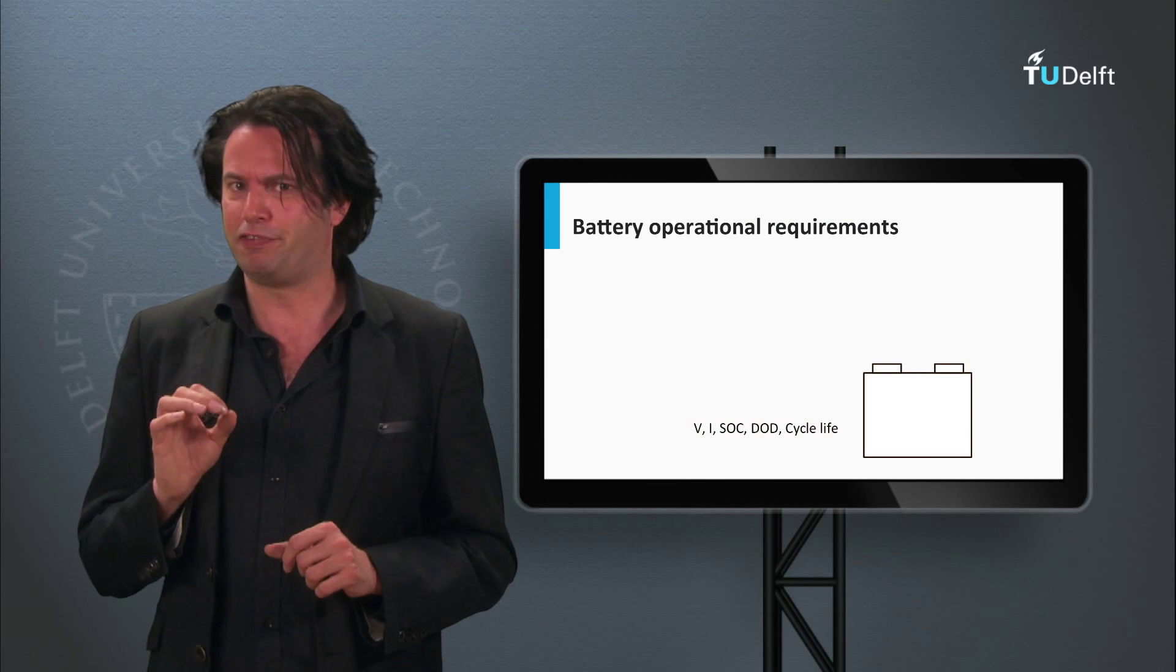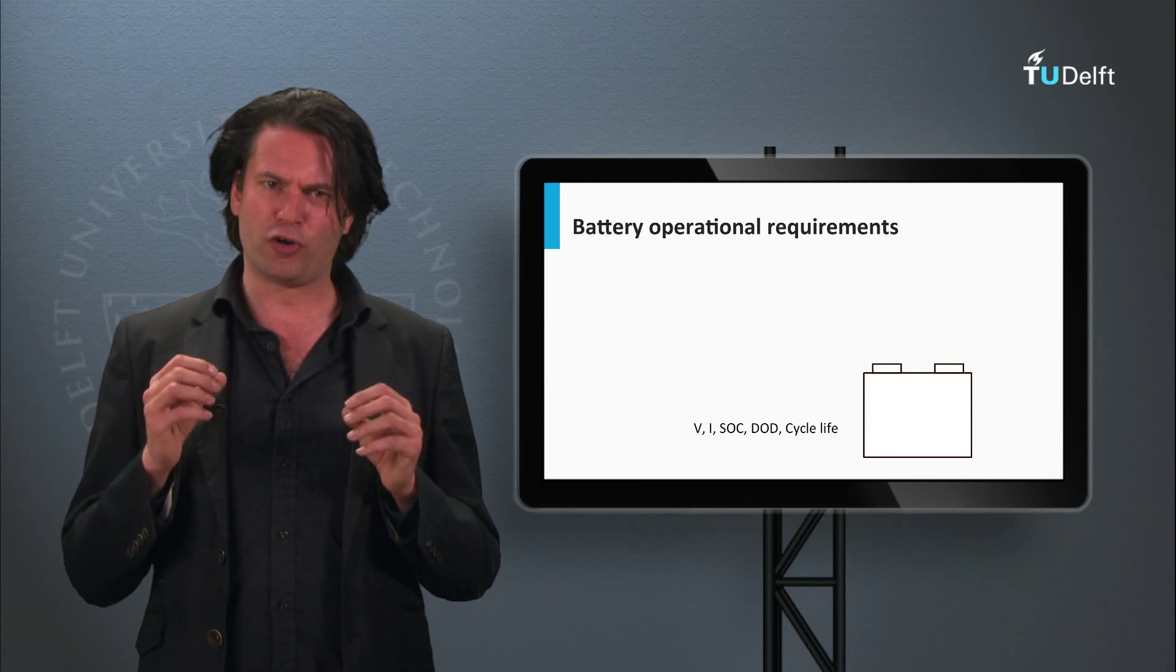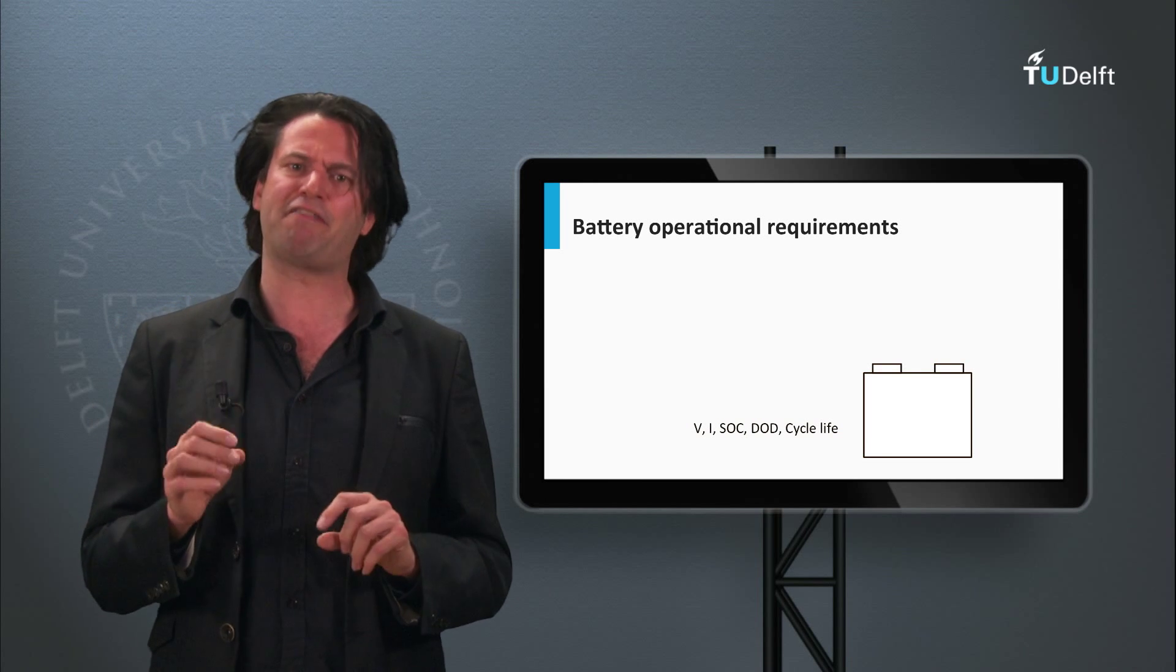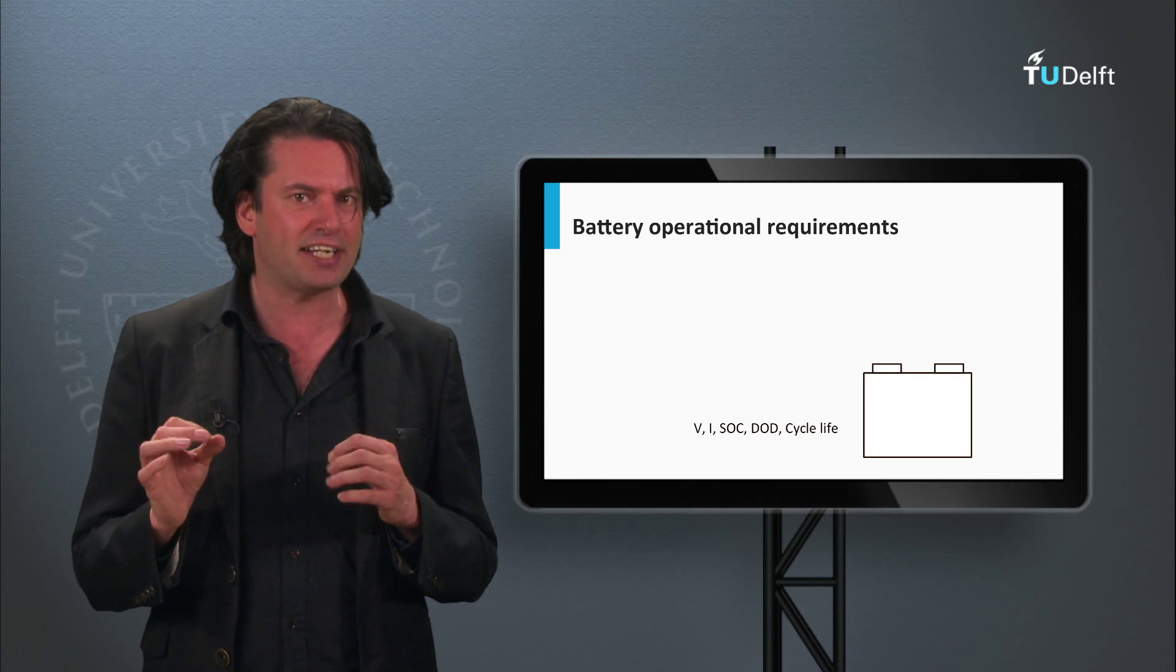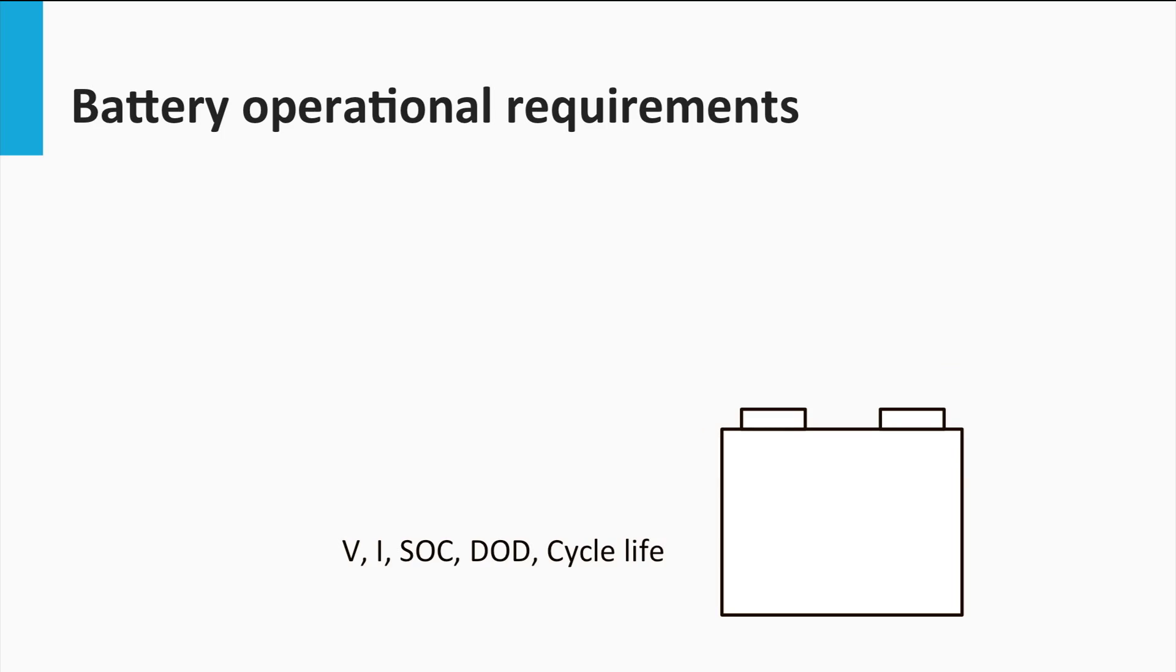In the previous video about the battery parameters you have learned the importance of having the right amount of current and voltage being provided to the battery. You know that the battery is an electrochemical device which requires a small overpotential when it needs to charge.